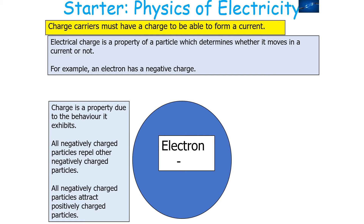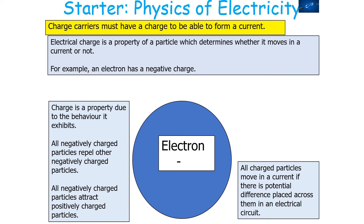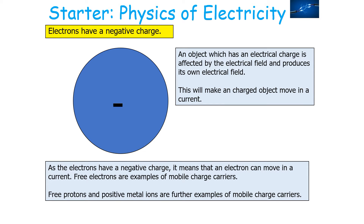Charge is a property defined by the behaviour it exhibits. All negatively charged particles repel all other negatively charged particles, and all negatively charged particles attract positively charged particles. All charged particles will move in a current if there is a potential difference or EMF placed across them in an electrical circuit. An object which has an electrical charge, like a proton or an electron, is affected by the electrical field and will also produce its own electrical field. As the electrons have a negative charge, they can move in a current. Free protons and positive metal ions are further examples of mobile charge carriers that can move in a current.